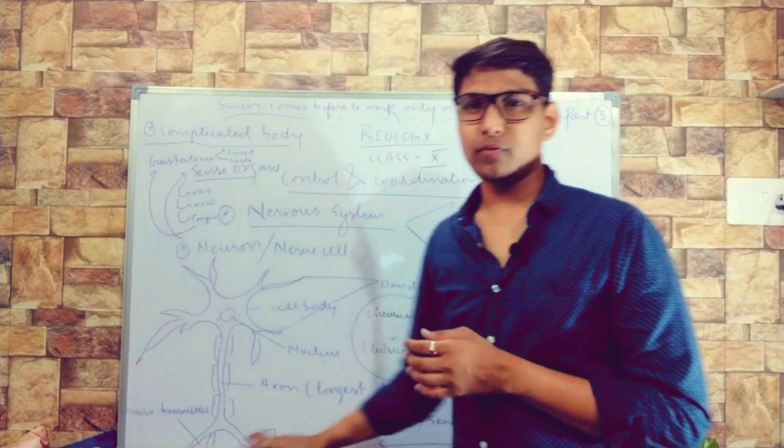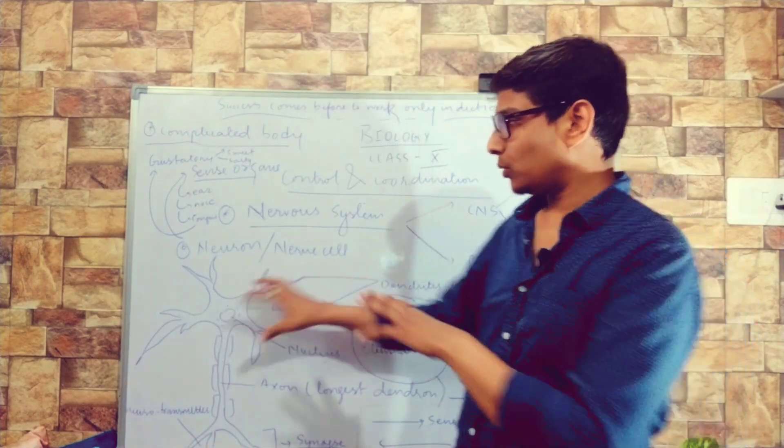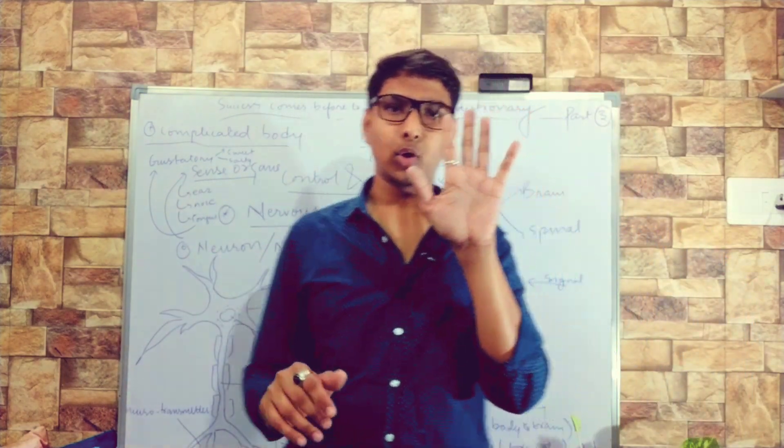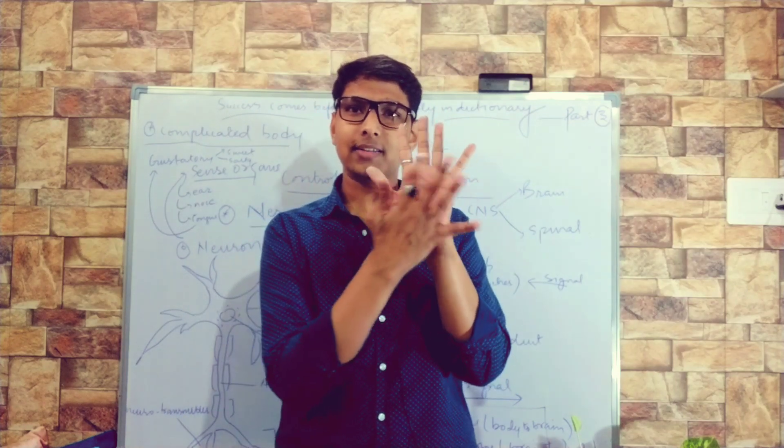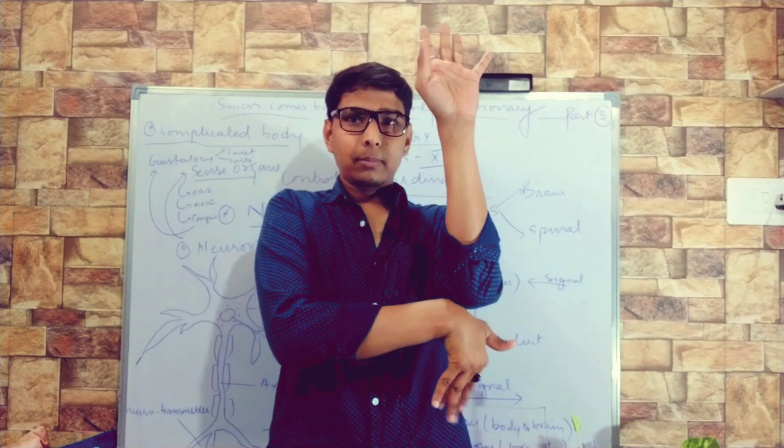Now let's study the structure of neuron. Just imagine my hand as a neuron. The fingers are acting as dendrites. This is cell body. This is axon. And imagine like here.